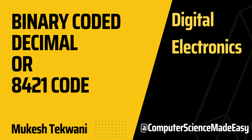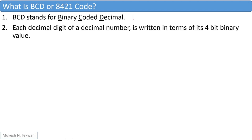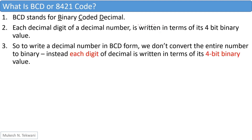Welcome to this session on BCD or 8421 code. The term BCD stands for binary coded decimal. In this system, each decimal digit of a decimal number is expressed in terms of its 4-bit binary equivalent value. So to write a decimal number in BCD form, we don't convert the entire number to binary. So a BCD code is not a pure binary form. Instead, what we do is we take each digit of the decimal and write it in terms of its 4-bit binary value.